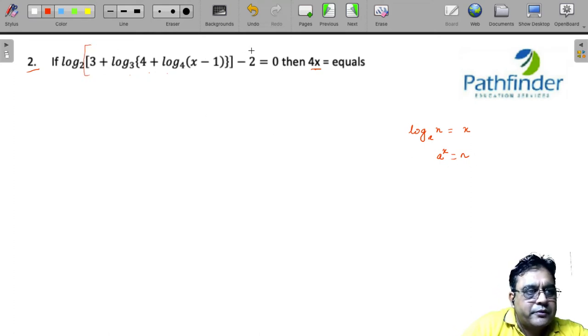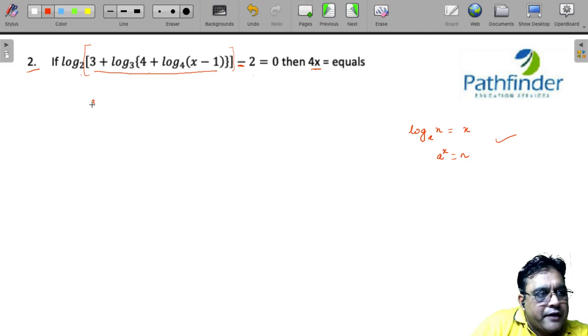So first of all, we consider from here to here. Now, this becomes 0, this becomes equal to 2. It means 2 squared must equal this whole bracket by this property. So we have 3 plus log base 3 of (4 + log base 4 of (x - 1)) equals 4.